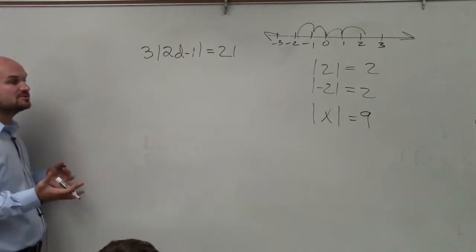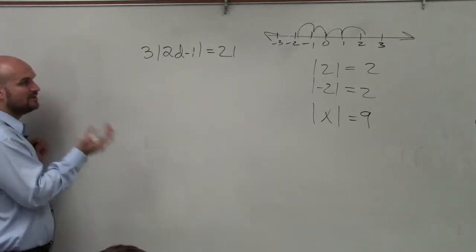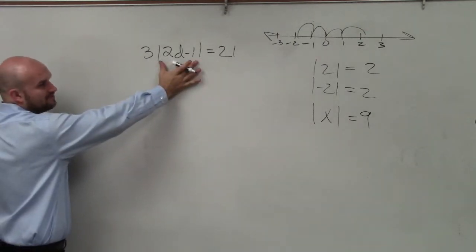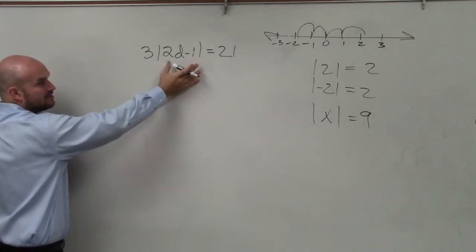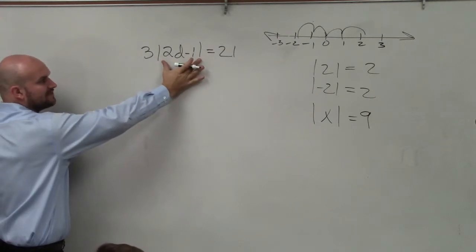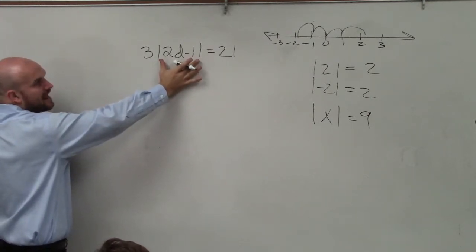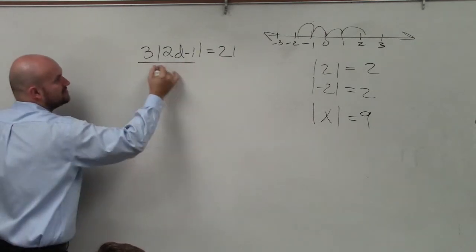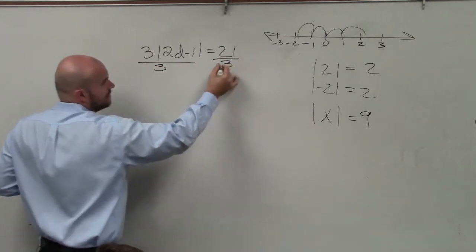So to find those two solutions, we need to create two cases. But we cannot create two cases until our absolute value is isolated. So look at the absolute value and say, what is happening to my absolute value sign? It's being multiplied by 3, so I have to divide by 3.